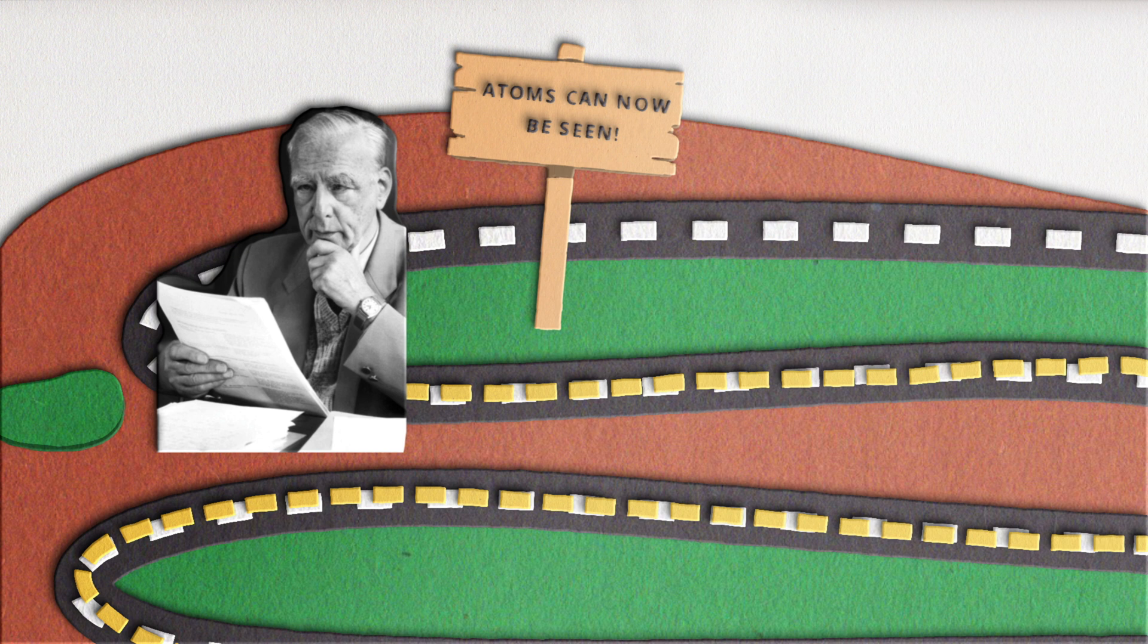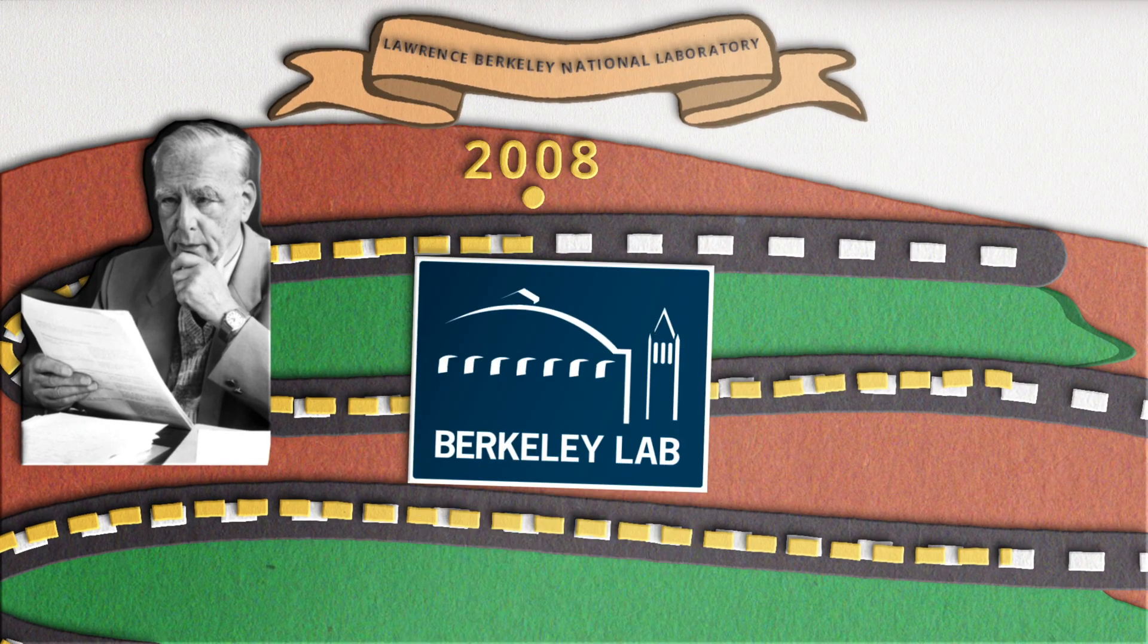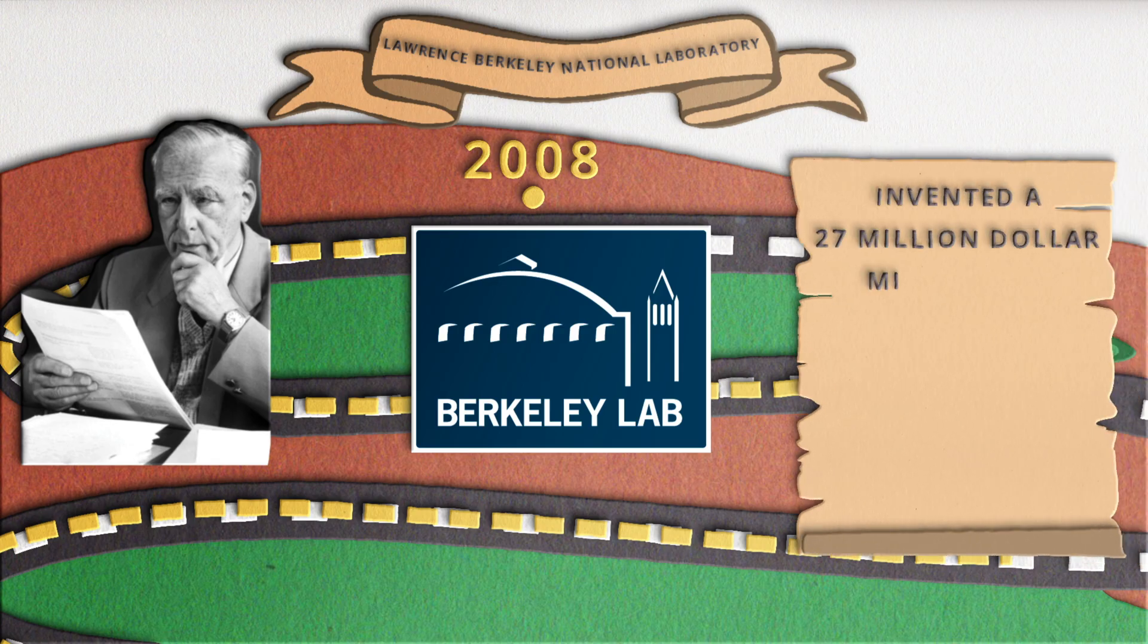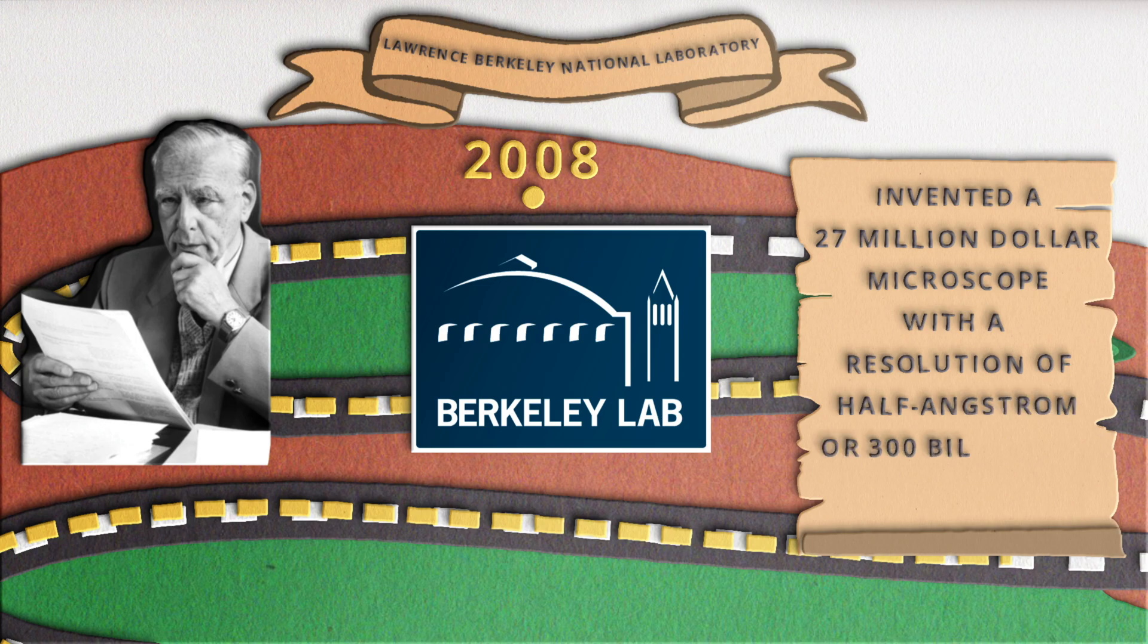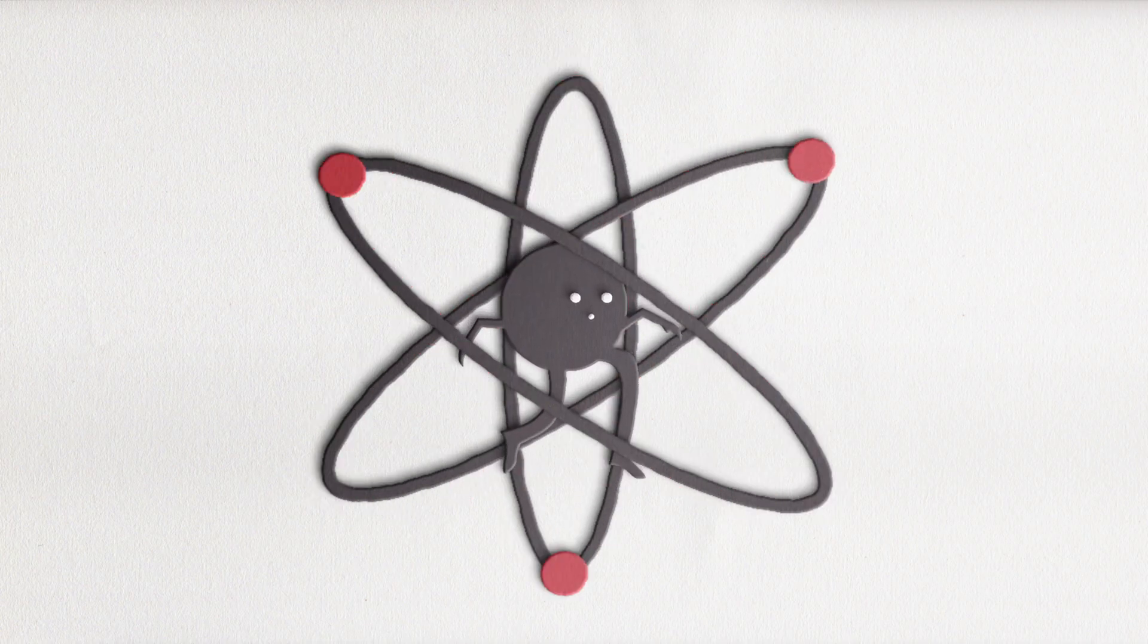We're still improving microscopes today, making giant leaps forward with each decade that passes. In 2008, researchers at Lawrence Berkeley National Laboratory invented a 27 million dollar microscope with a resolution of half angstrom, or 300 billionths of a foot. This microscope is so powerful, it can reveal the position of an individual atom.